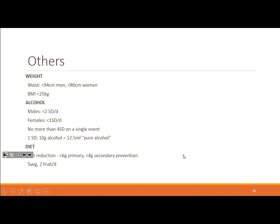For counselling on weight, alcohol, and diet, this is the range you want to bring patients to. Salt is particularly important for hypertension and stroke prevention. If someone doesn't have hypertension yet, bring them to six grams of salt or less; if they already have hypertension, you're looking at four grams. Heart failure may require as low as two grams. Other dietary advice includes five servings of vegetables and two servings of fruit per day.